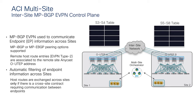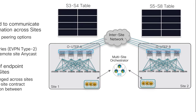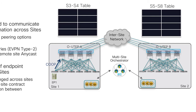The hierarchical design also applies to the overlay, where EVPN is established between spines in different sites for tight control over exchanged information. When an endpoint EP1 connects in Site 1, the leaf sends COOP control plane information to the local spine to add EP1 to the local COOP database. Similarly, EP2 in Site 2 ends up in the COOP database of the Site 2 spine. At this point, EP1 and EP2 information is not exchanged across sites.